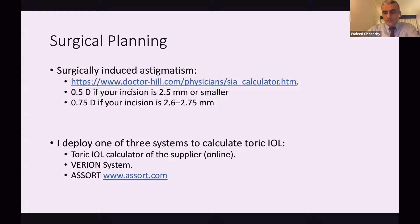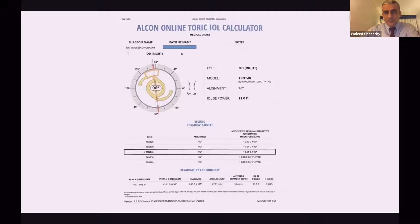For myself, I also use the calculators from the manufacturer — whether it's Alcon, Zeiss, or Symphony for Johnson & Johnson — and use the Verion life marking system for selection and monitoring of the axes. You can also use the free online Assort site. This is the printout of the Alcon calculator: it gives you exactly the axis number, orientation of the cylinder, residual refractive error, and the regular astigmatism and axis after surgery.